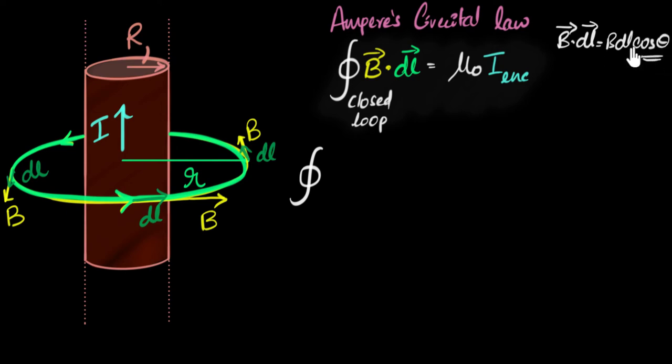B dot dl would be B dl cos theta where theta is the angle between B and dl. But since the angle between B and dl is zero, cos zero is one, so this will just be B dl. So I'll just get magnitude of B times magnitude of dl. So I only have to worry about magnitudes now. I don't have to worry about direction anymore.